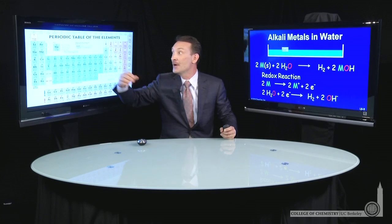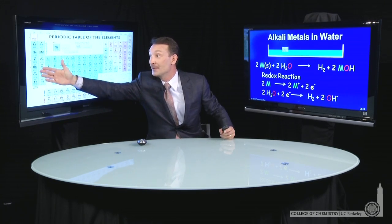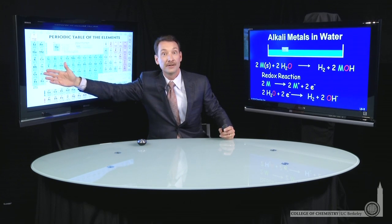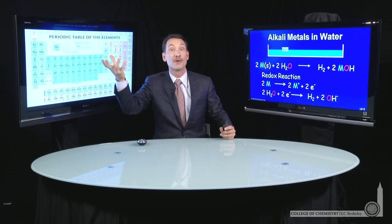potassium, and rubidium reacting in water as they go down the periodic table, the ionization energy is getting lower. So the overall reaction is getting more vigorous.